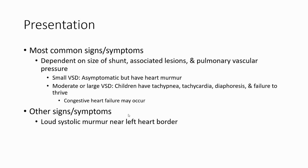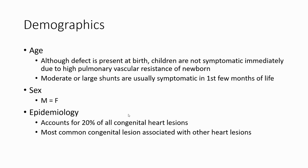Other signs include a systolic murmur. Although the defect is present, children are not symptomatic immediately due to high pulmonary vascular resistance in the newborn. Moderate or large shunts are usually symptomatic in the first few months of life, occurring equally in male and female. VSDs account for 20% of all congenital heart lesions and are the most common lesions associated with other heart defects.